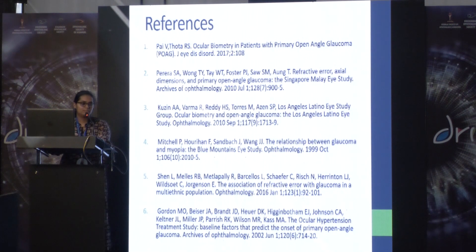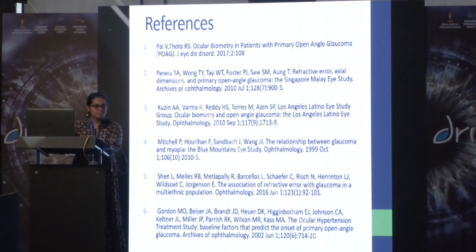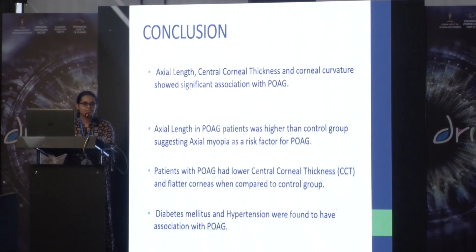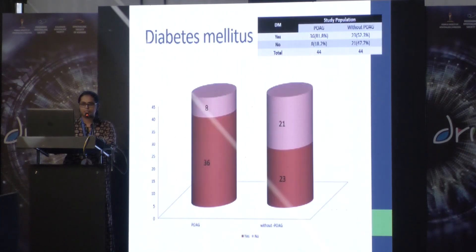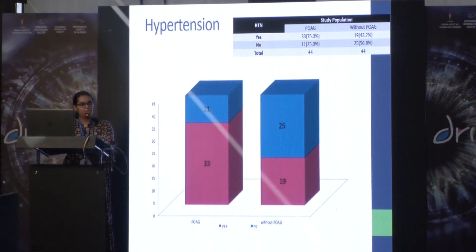A reviewer noted that almost all these points are known factors and asked if there was anything new from this study. The presenter responded that it was done in a population in Kerala. The reviewer then asked about the nature of the association with diabetes and hypertension — whether it indicated high risk. The presenter clarified that in the primary open angle glaucoma group there were more diabetic and hypertensive patients compared to the control group, and the association was statistically significant.